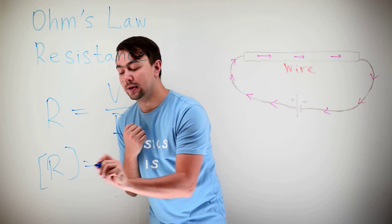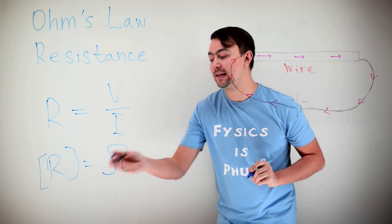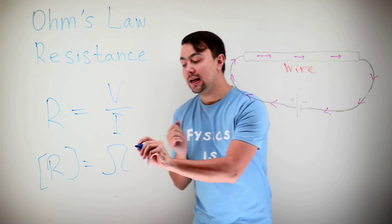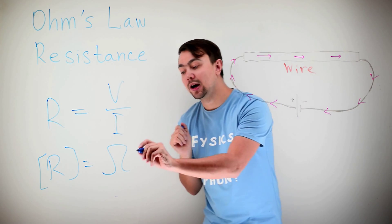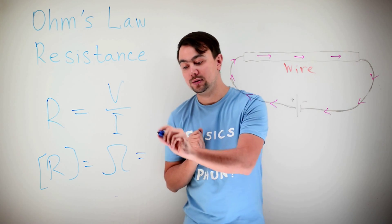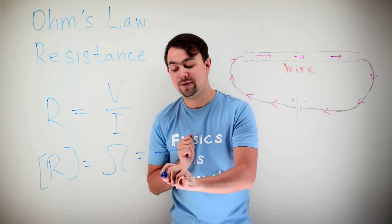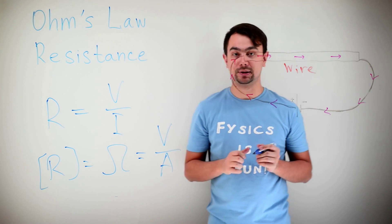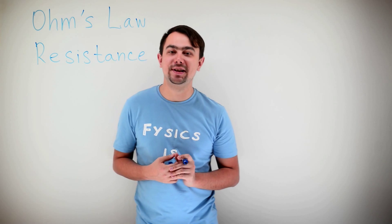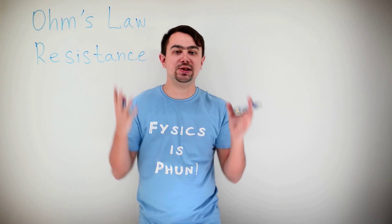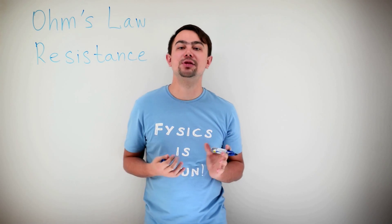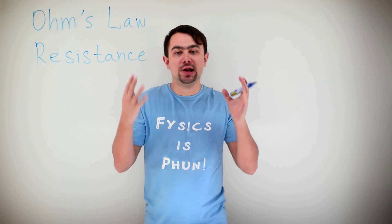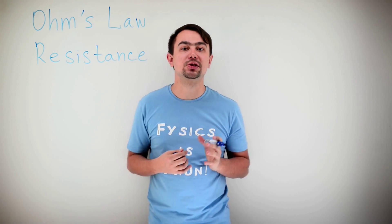The resistance is measured in ohms. The symbol for ohm is the Greek letter omega. Since resistance is voltage divided by current, that's volt divided by ampere. I would also like to tell you about the difference between a conductor and an insulator. We know that conductors conduct electricity, insulators don't. But why?